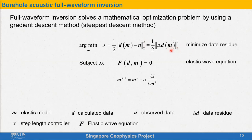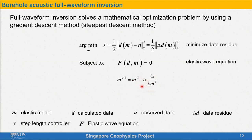If the data residual is large, the velocity model is very different from the real model, and we need to modify the model to make the data residual small. There are many ways to modify the model, like gradient descent method, conjugate gradient method, and Quasi-Newton method. In this research, I use gradient descent method, which is also called steepest descent method, because it is simple and stable. For gradient descent method, the most critical procedure is to calculate the gradient of the objective function with respect to the velocity model. A starting model M0 is also needed, and the best model could be obtained by iteratively searching in the opposite direction of the gradient.